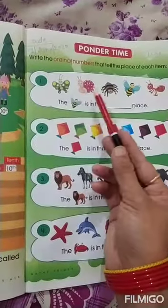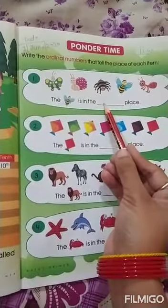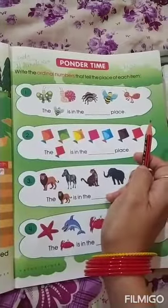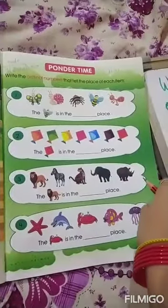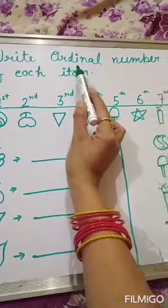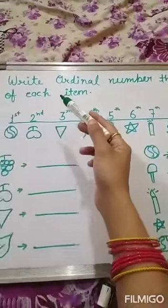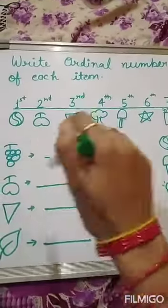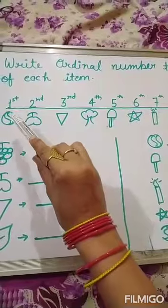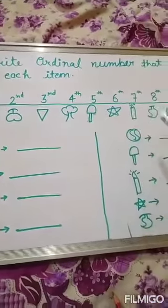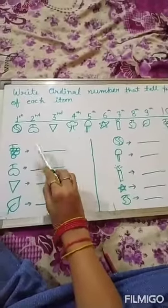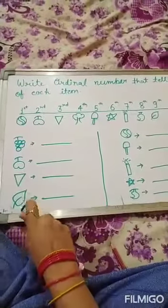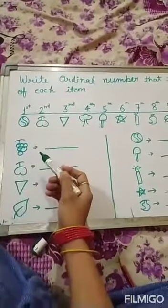I will tell you how to do the work. I will tell you in a different way. Okay children? Write the ordinal number that tells the place of each item. What do you have to do? You have to write the ordinal number. You have to draw pictures. Do you see? What is the position of the crab?